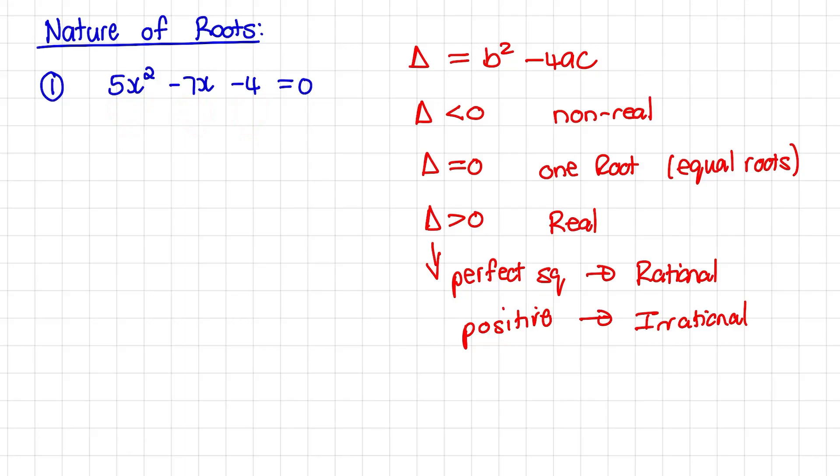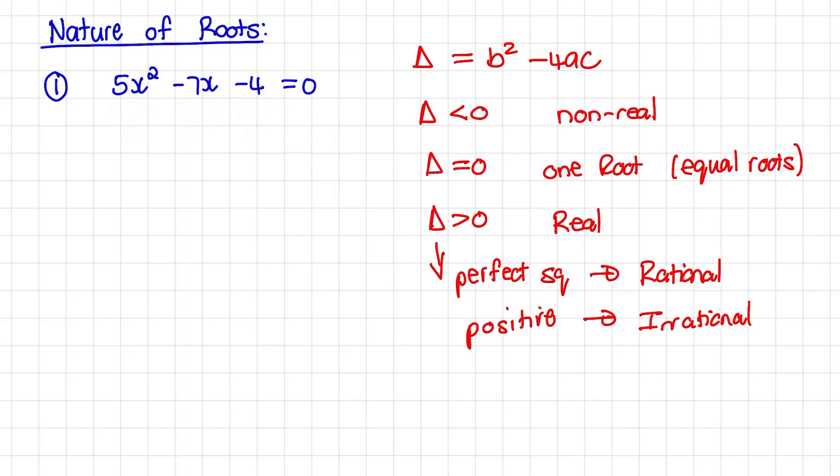We can identify our discriminant as b squared minus 4ac, where a is the coefficient of x squared and b is the coefficient of x.